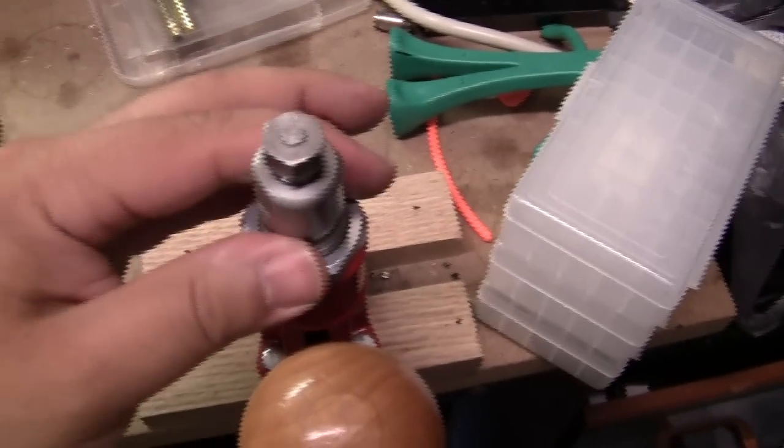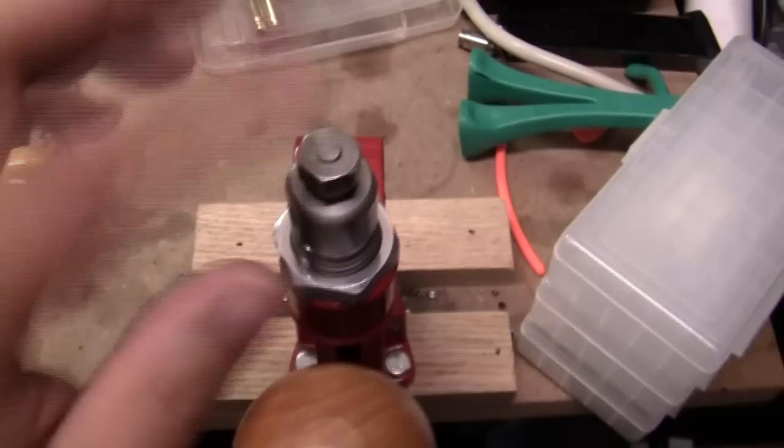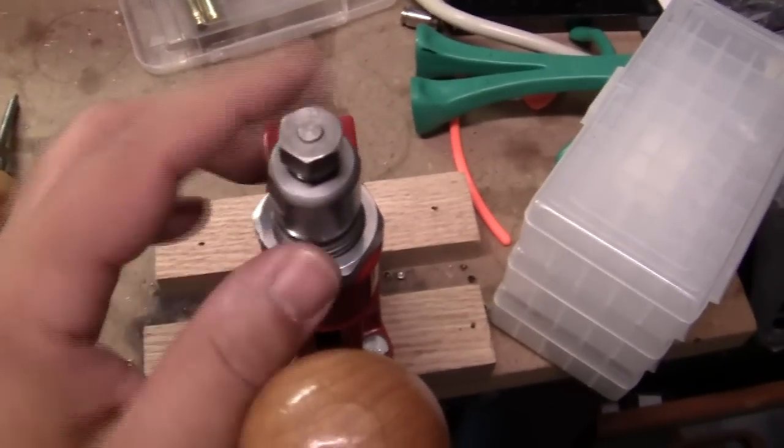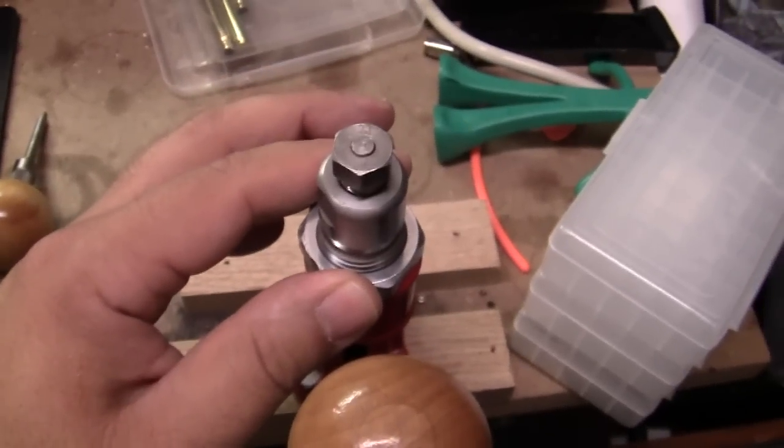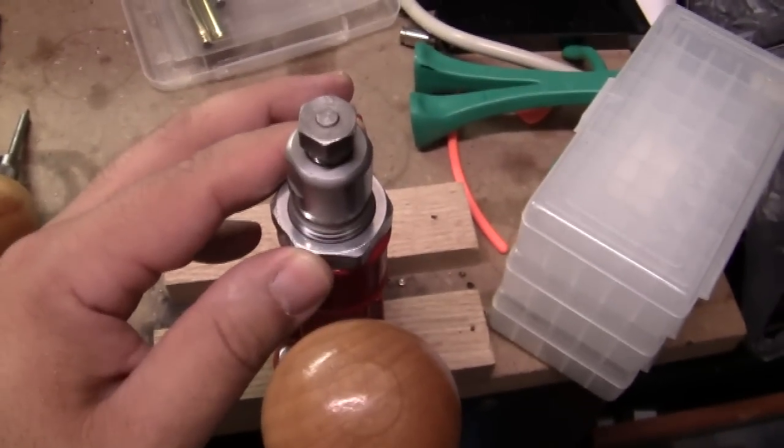And if for some reason your decapping stem breaks... Sorry about that, my camera died for a second. But yeah, if your brass gets stuck in the die and you can't get it out, that's when you send it back to the factory. In this case, I'm using Lee Deluxe reloading dies for .223.